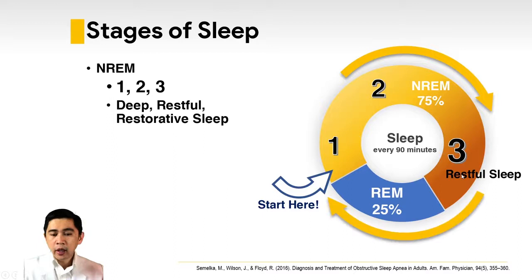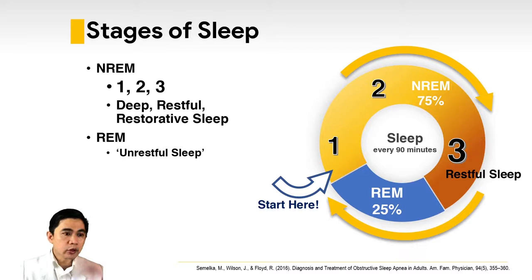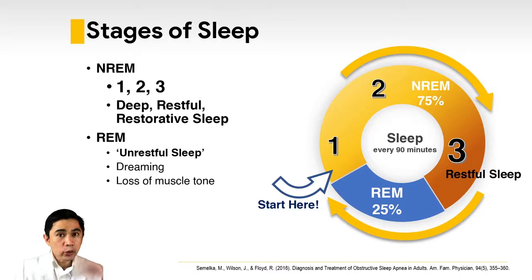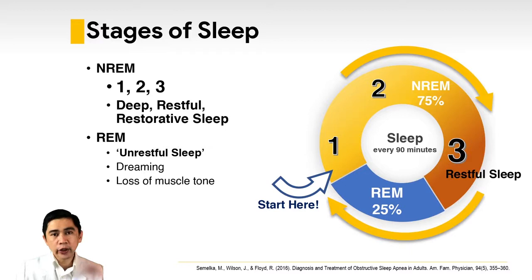After stage three NREM, we go into a phase called REM sleep — Rapid Eye Movement — which is considered the unrestful sleep, wherein you are dreaming and your brainwaves are very similar to the waking stage. However, there is a loss of muscle tone, probably to avoid acting out your dreams. This cycle of NREM stages one, two, three, then REM repeats every 90 minutes.